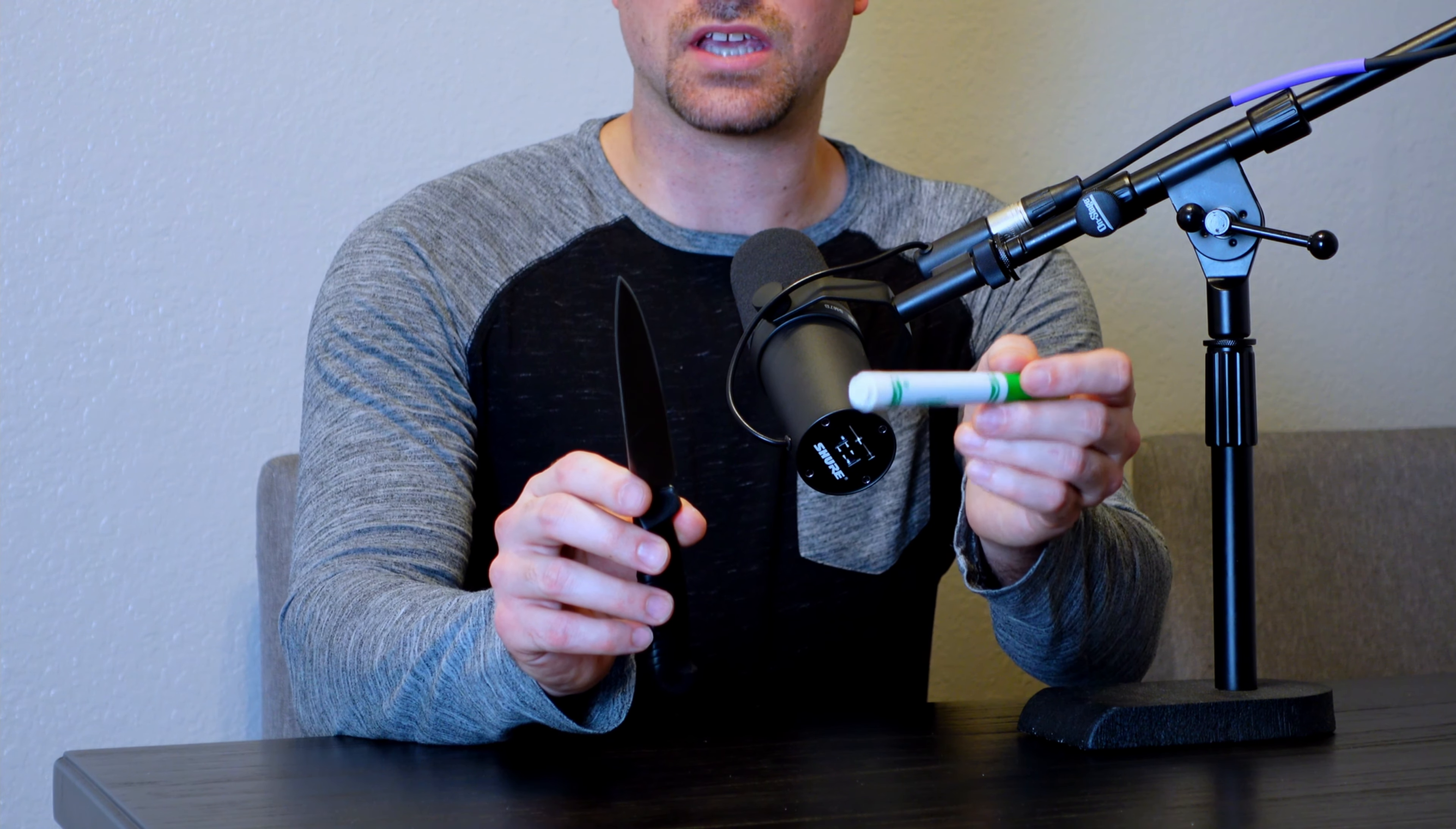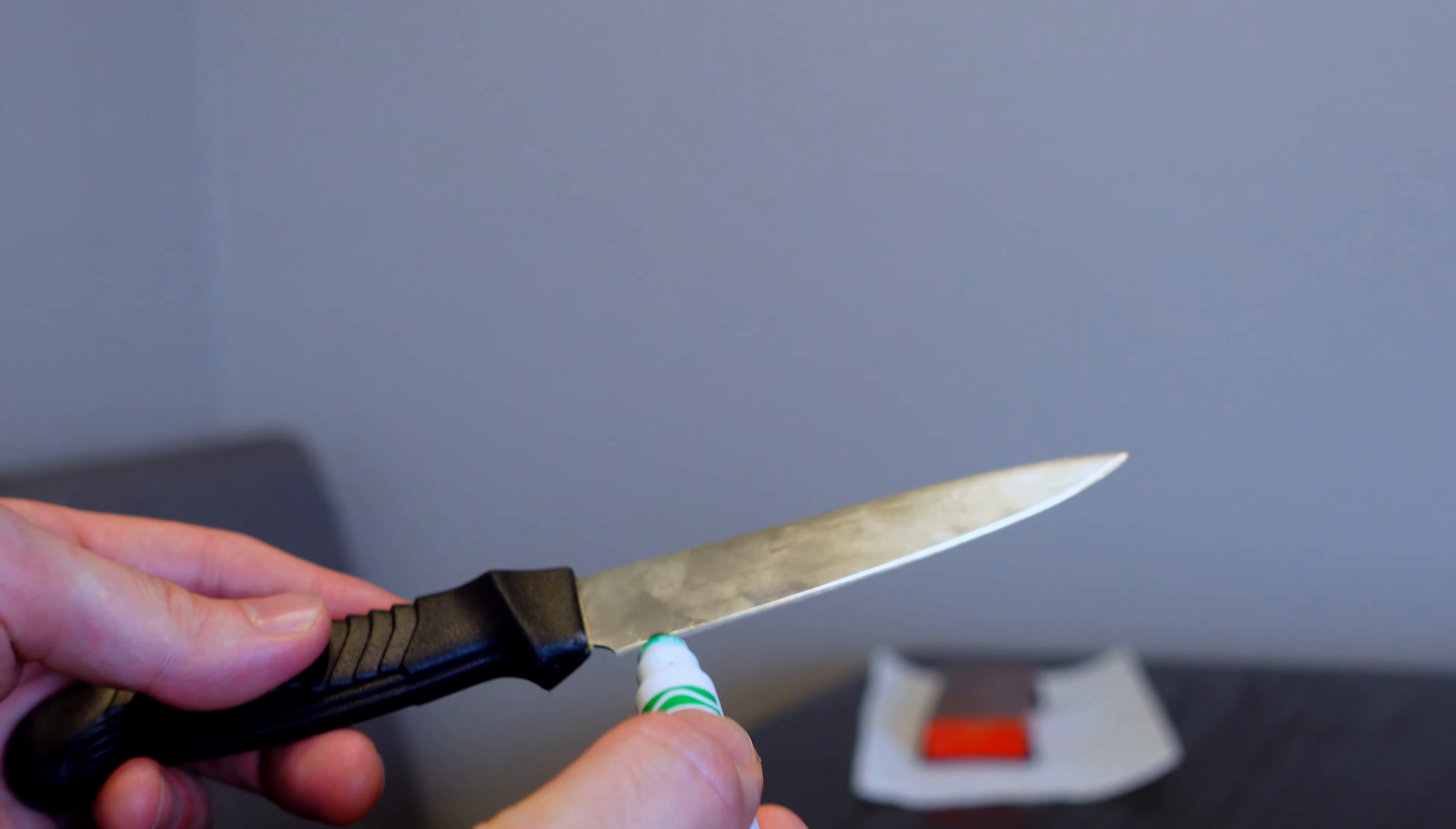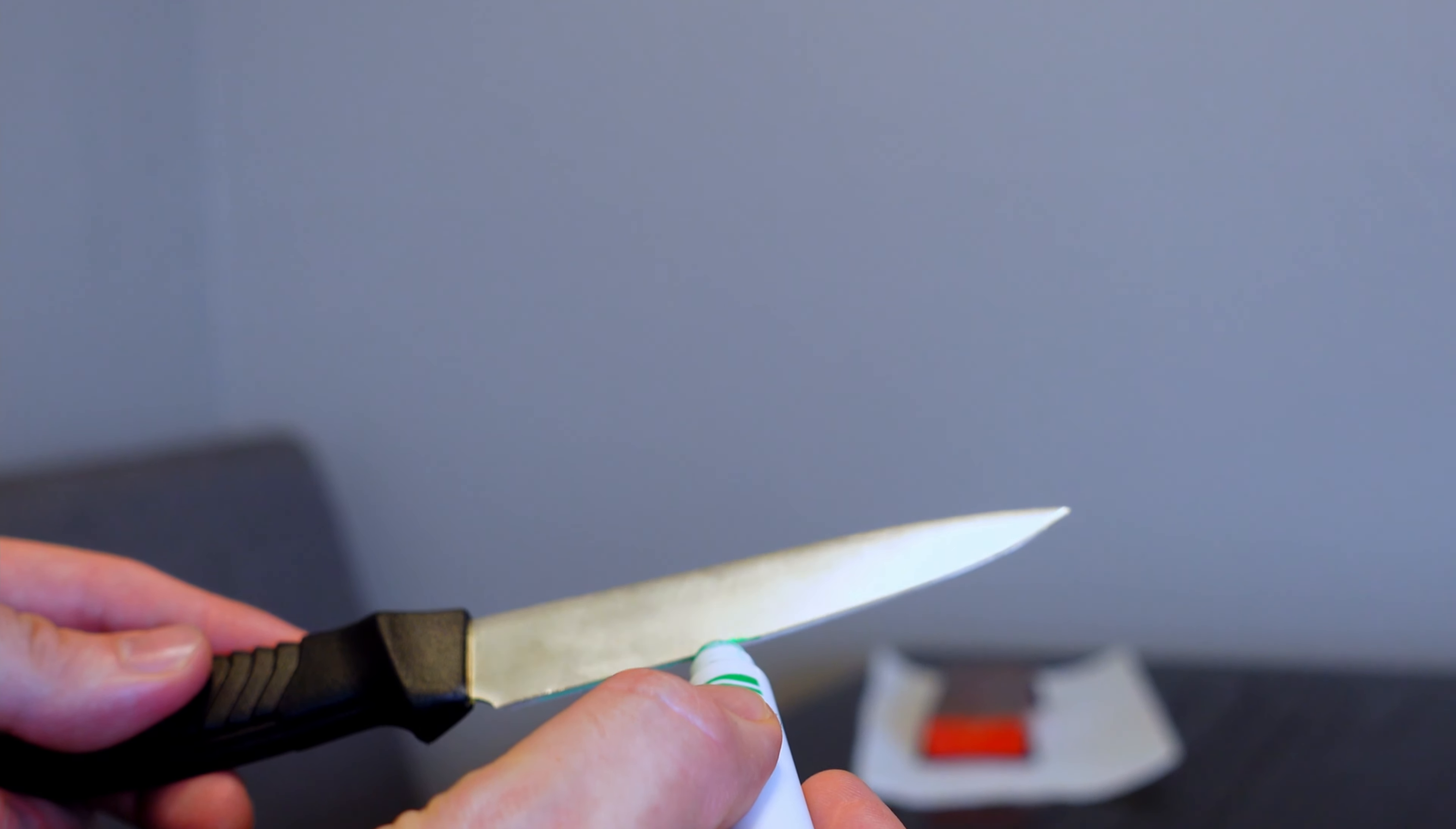To illustrate this I'm going to change the camera angle for you so I can show you this. So what I'm going to do here is I'm going to take this marker and I'm just going to draw on the edge of this knife and make sure I just completely cover the secondary bevel.